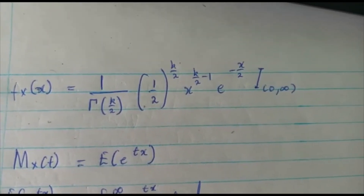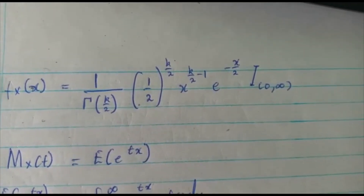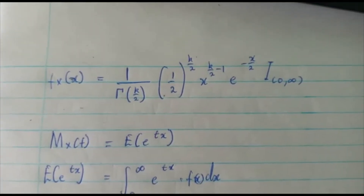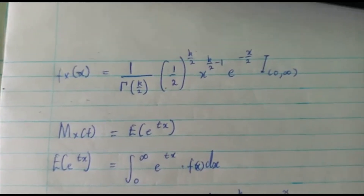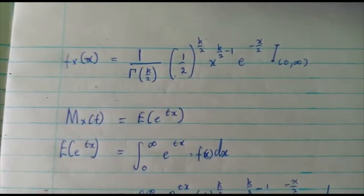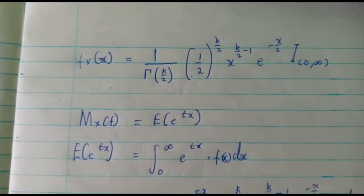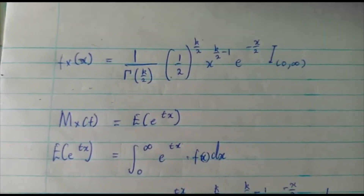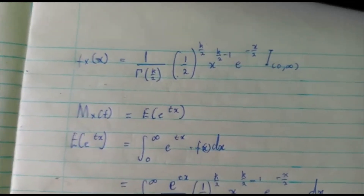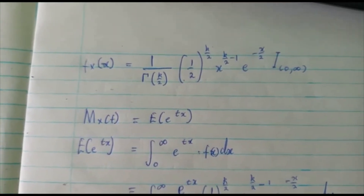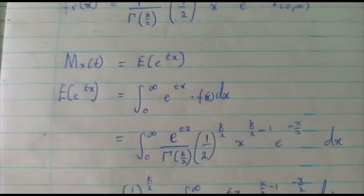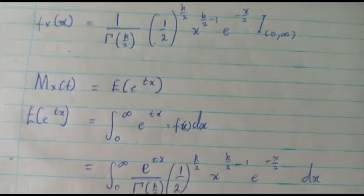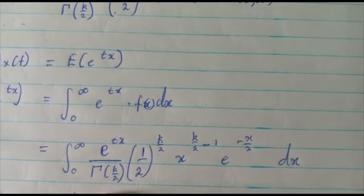We are talking about the moment generating function of a gamma distribution. The gamma distribution is given by this formula. For a continuous distribution, the moment generating function is found by integrating from zero to infinity, multiplying the distribution function by e to the power tx, then integrating — essentially finding the expectation of e to the power tx. We substitute f of x with our gamma distribution formula.